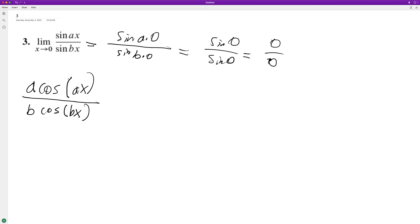Apply as x approaches zero. We get a times the cosine of a times zero. Well, anything times zero is just zero. And b times the cosine of b times zero. Anything times zero is zero. This is the cosine of zero which is just equal to one. So we get a times one over b times one.